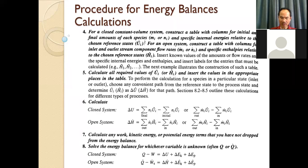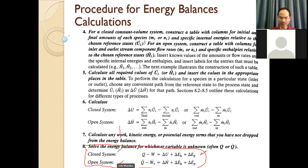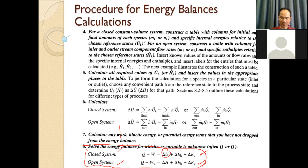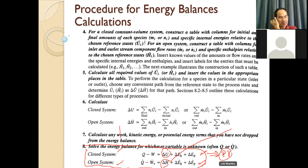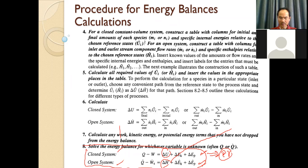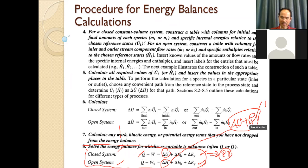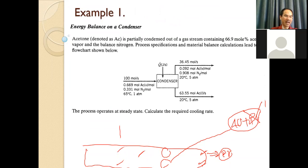Now solve the equation. For a closed system, use the internal energy form of the energy balance; for an open system, use the enthalpy form. The difference is: the closed system uses internal energy instead of enthalpy, since there is no flow work (no pV term). For the open system, delta H equals delta U plus pV — the pV term is incorporated into the enthalpy. Solve the energy balance accordingly. We will continue in five minutes — let's take a short break.